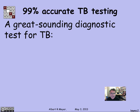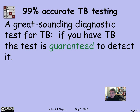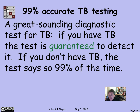Suppose I have a diagnostic test for tuberculosis. It really sounds great, because it's going to be more than 99% accurate. Here are the properties: if you have TB, this test is guaranteed to detect it and say you have TB. If you don't have TB, 99% of the time the test correctly says you don't have TB, and 1% of the time it gets it wrong.